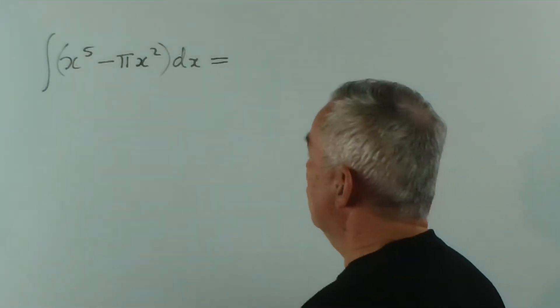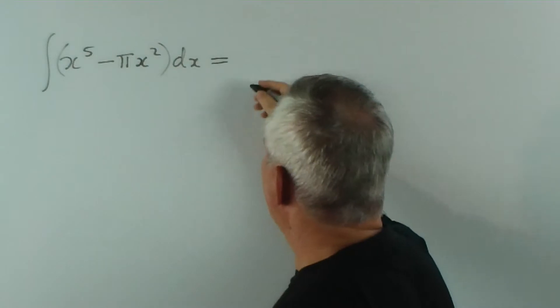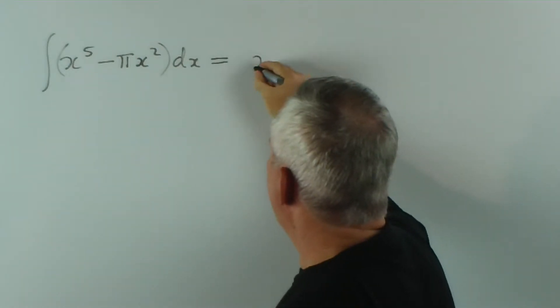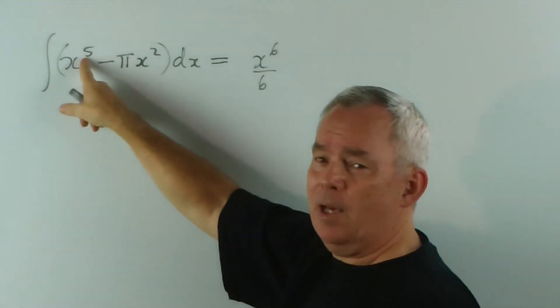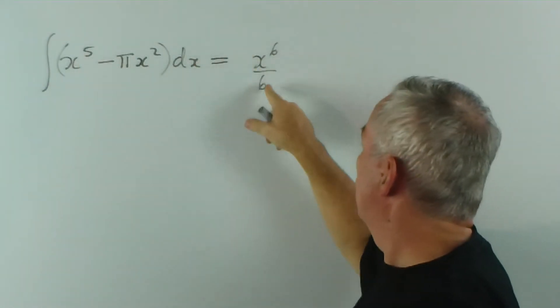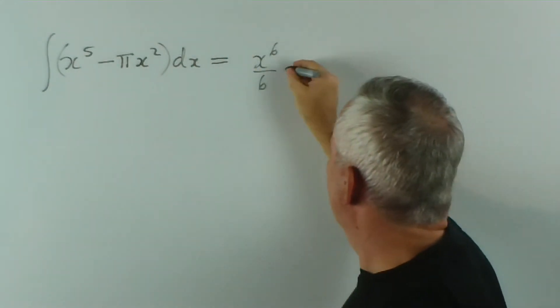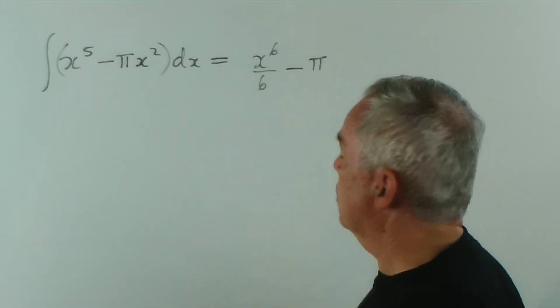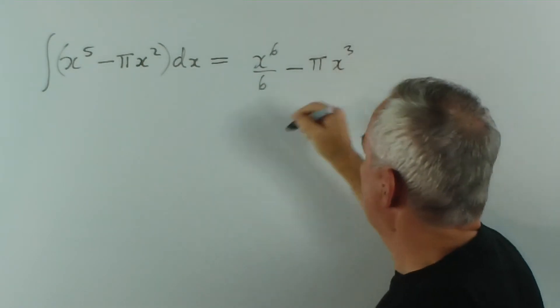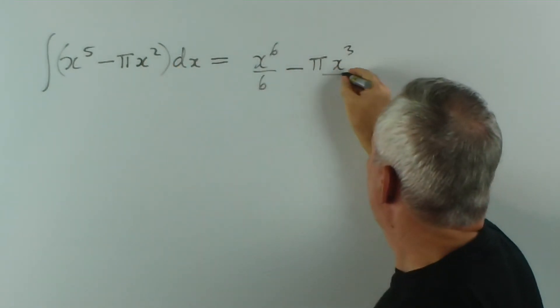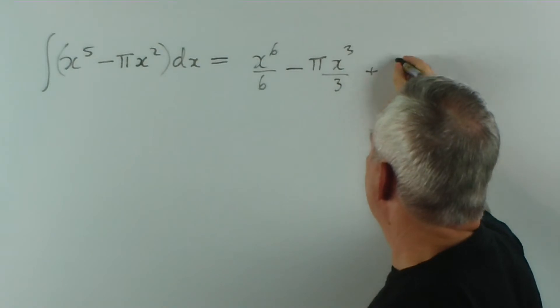So really, the integral for this is remarkably simple. It is just x to the 6 on 6, because we increase the power by 1 and write that in the denominator's position, minus π, because it's just a number, and the integral of x squared will be x cubed, increasing the power by 1, over 3, plus c.